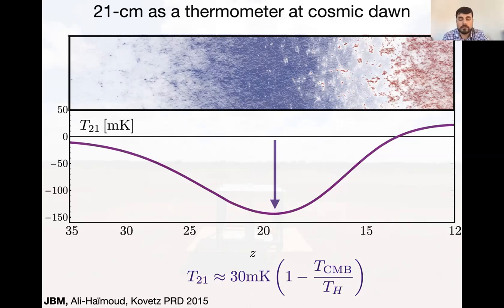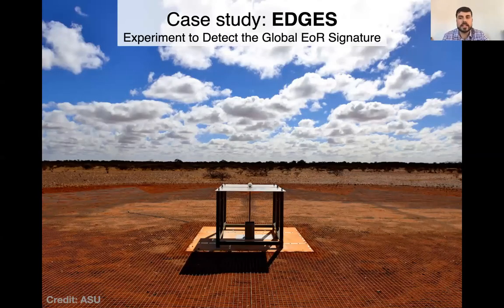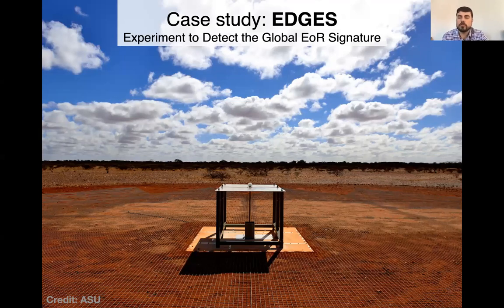What we proposed in 2015 was to use this kind of measurement to look for cooling or heating of hydrogen. As a case study of how well you can do this, I'll tell you about EDGES — the Experiment to Detect the Global EoR Signature. It's a tiny collaboration of about five to ten people. The experiment is a couple of meters wide, located in Australia. They started earlier than other experiments and were collecting data earlier.